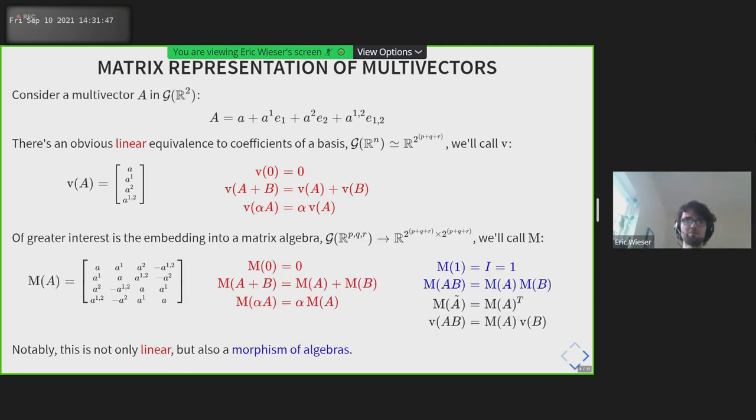What's more interesting is the embedding into a matrix algebra. If we have an arbitrary Clifford algebra over P, Q, R, we can embed that into a matrix of 2 to the P plus Q plus R by 2 to the P plus Q plus R, which we call M. The first column of M is just V, because it is the part of the matrix that multiplies by 1. This is a linear map - it preserves zero, addition, and scaling. But it's also a morphism of algebras. It maps the one multivector to the identity matrix, maps the product of multivectors to the product of their matrices, and it also preserves the reversion, which sends to the transpose.